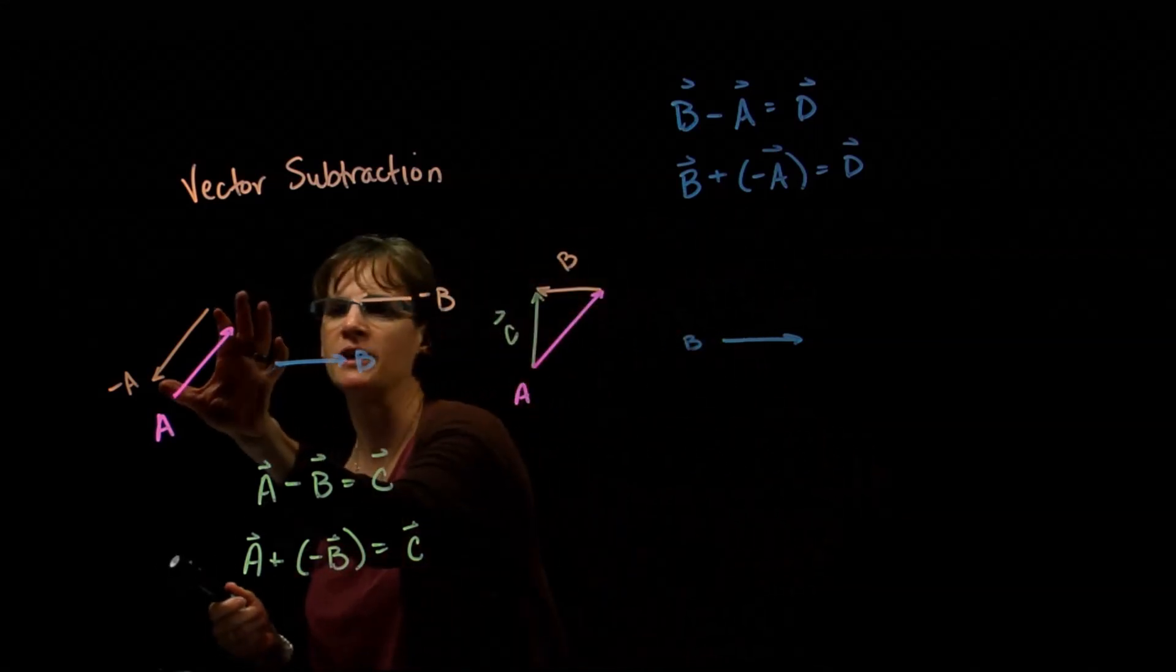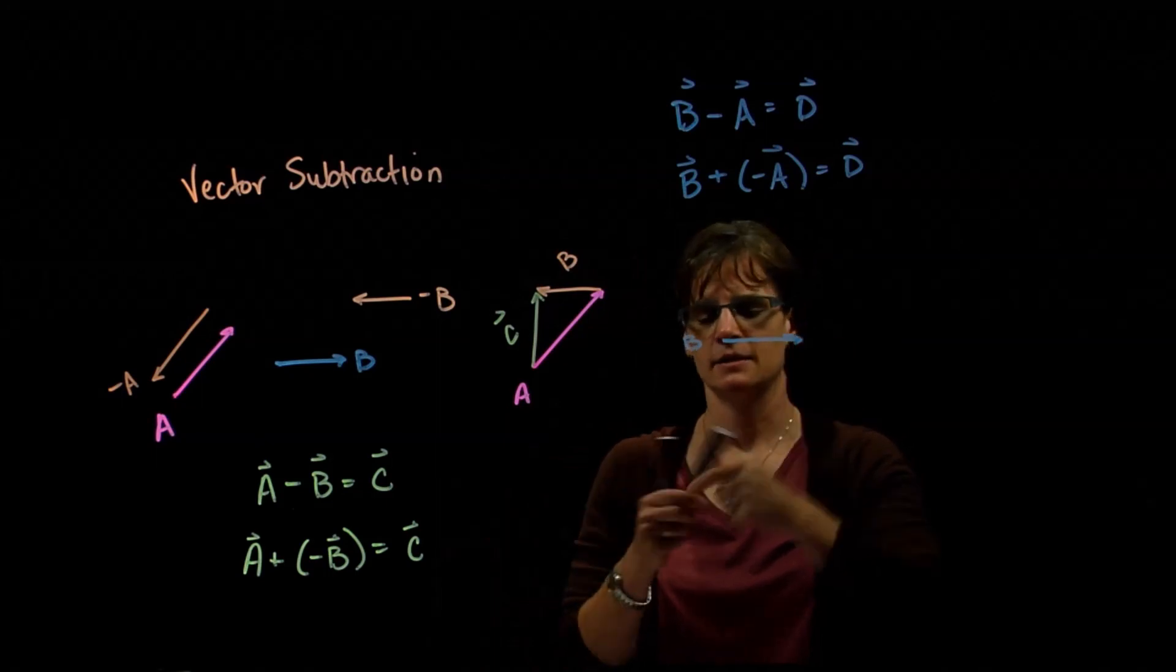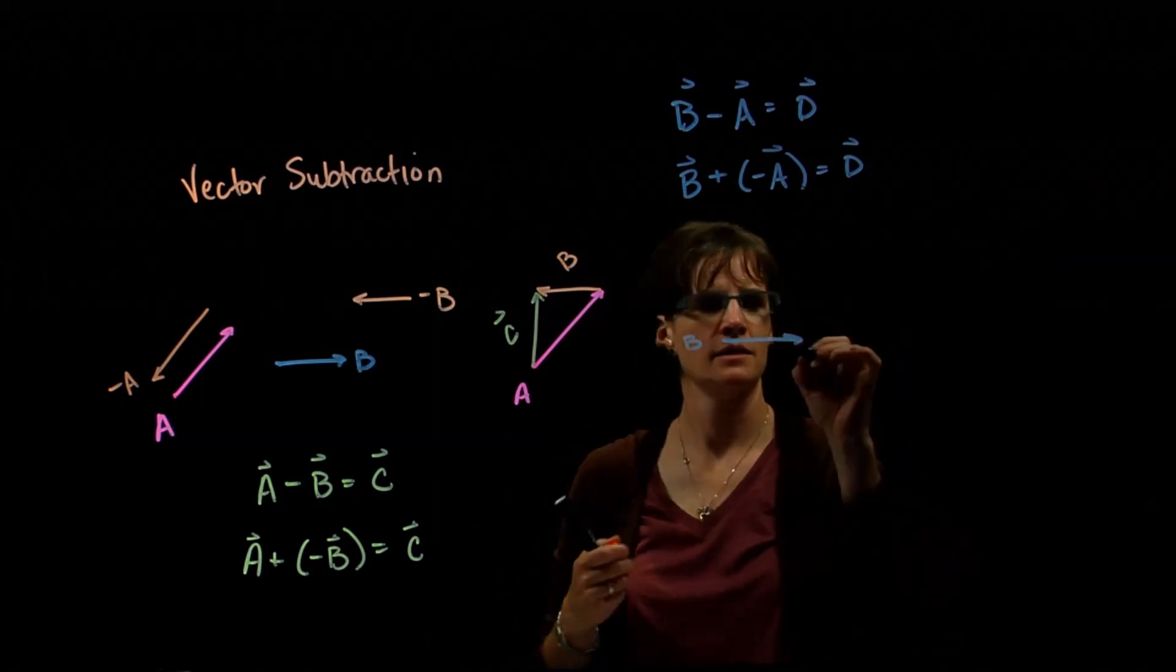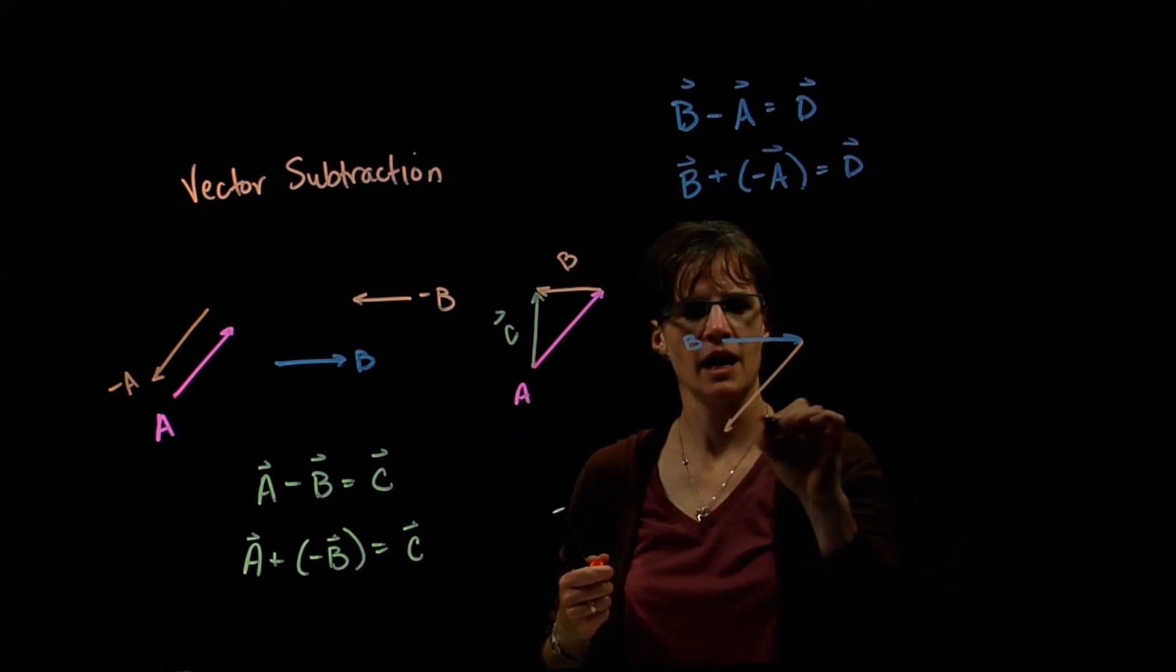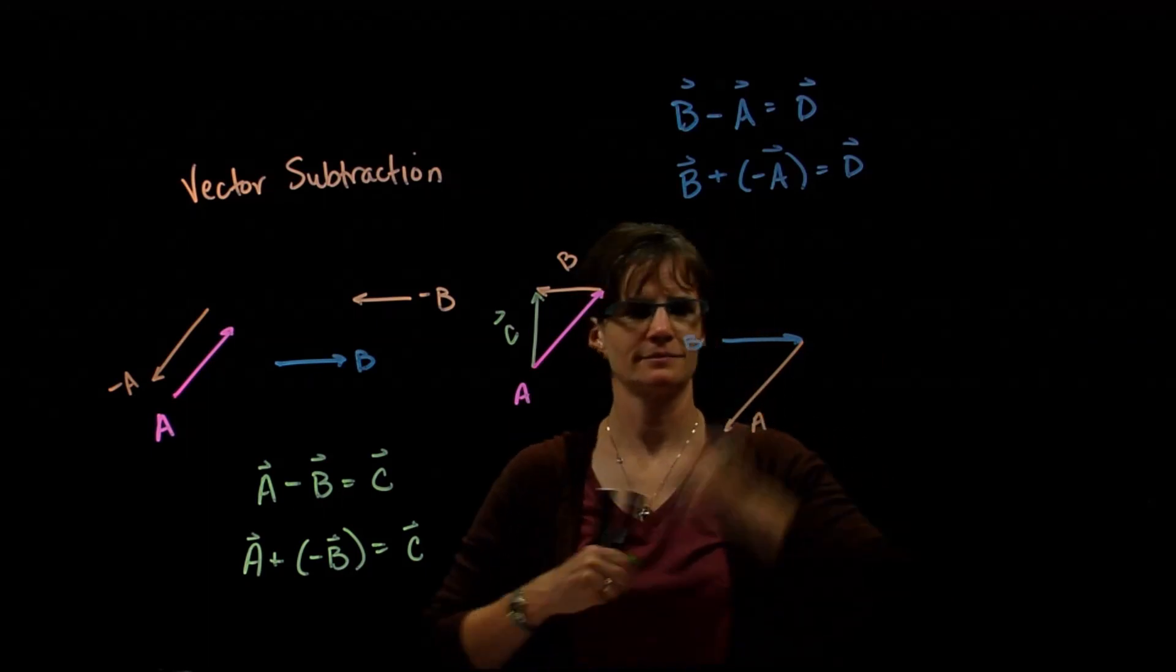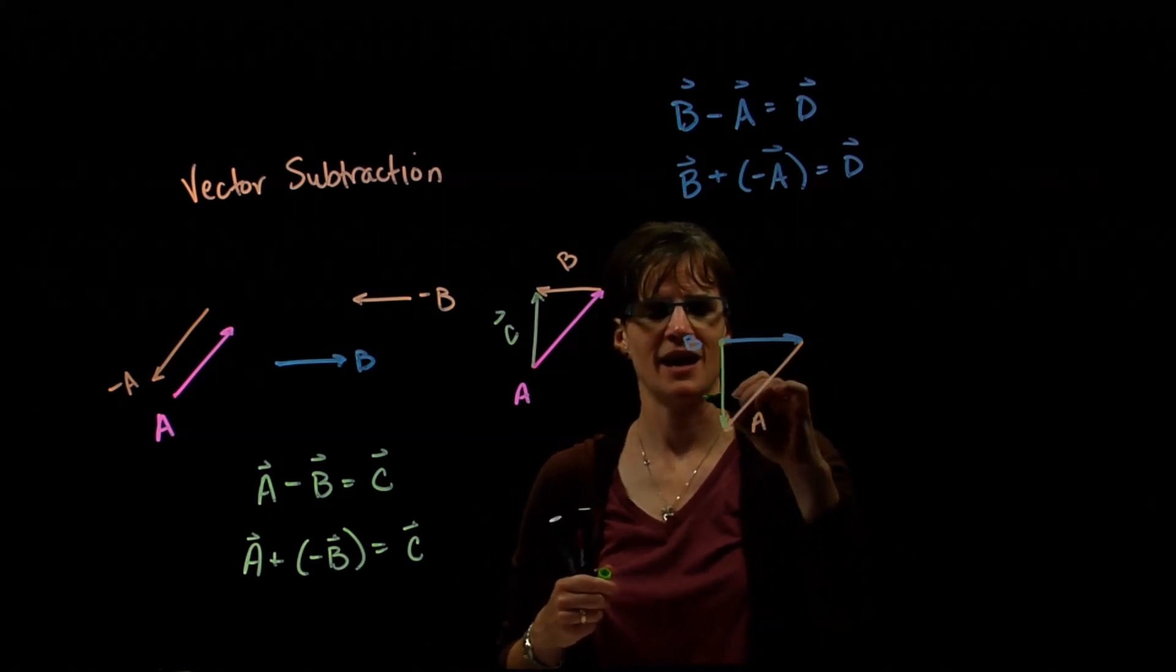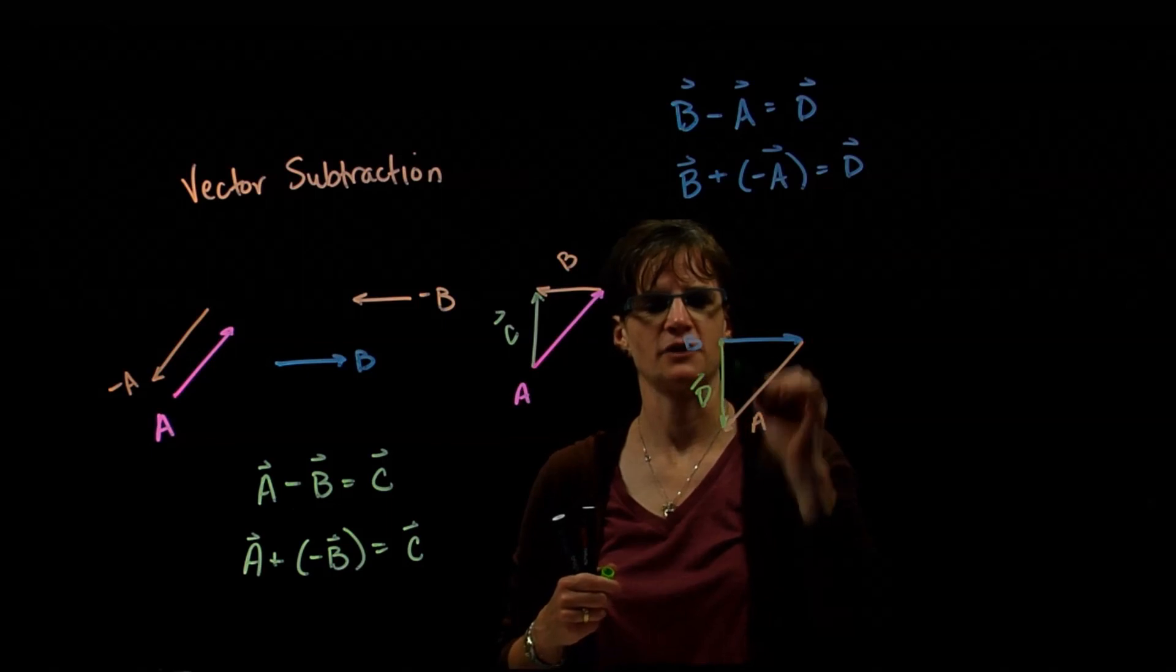And then we take my negative vector A. I pick it up. I put head to tail, head to tail. Here is my negative vector A. And the resultant vector goes from the tail of B to the head of A. So this was our vector D.